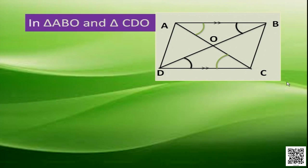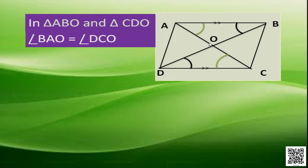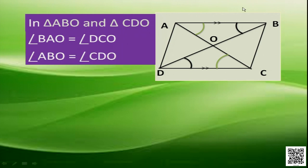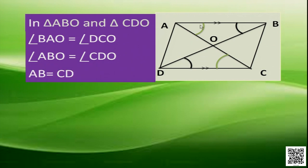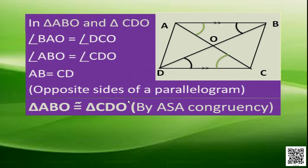Now in triangles ABO and CDO, we compare these two triangles for congruency. Angle BAO is equal to angle DCO because they are alternate interior angles. Angle ABO is equal to angle CDO, also alternate interior angles. And AB is equal to CD, as they are the opposite sides of a parallelogram. By angle-side-angle property, these two triangles are congruent. So triangle ABO is congruent to triangle CDO.